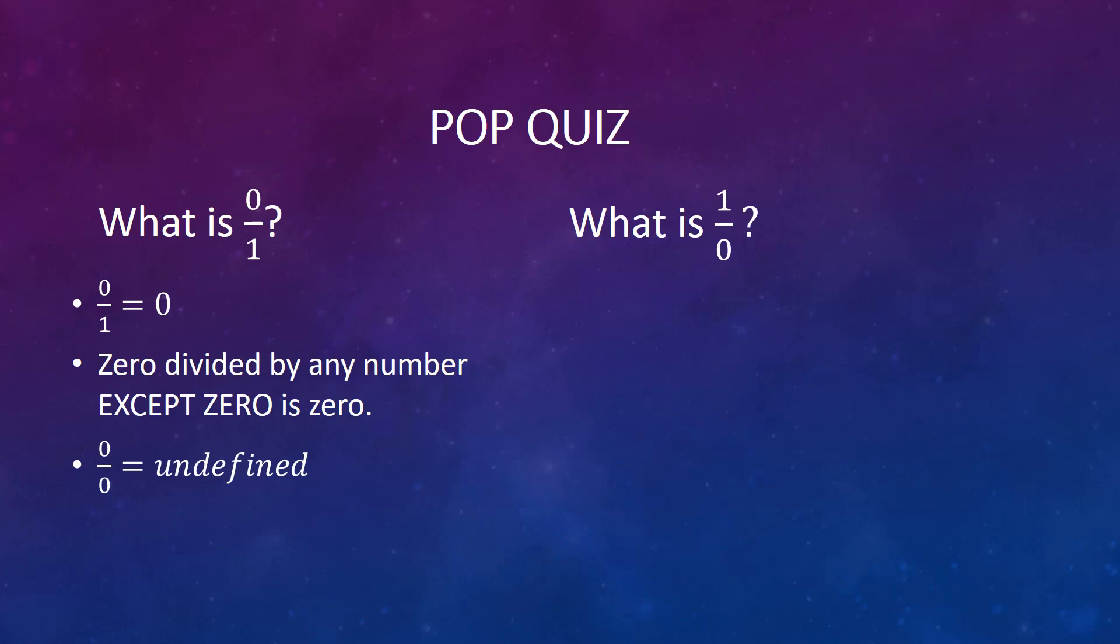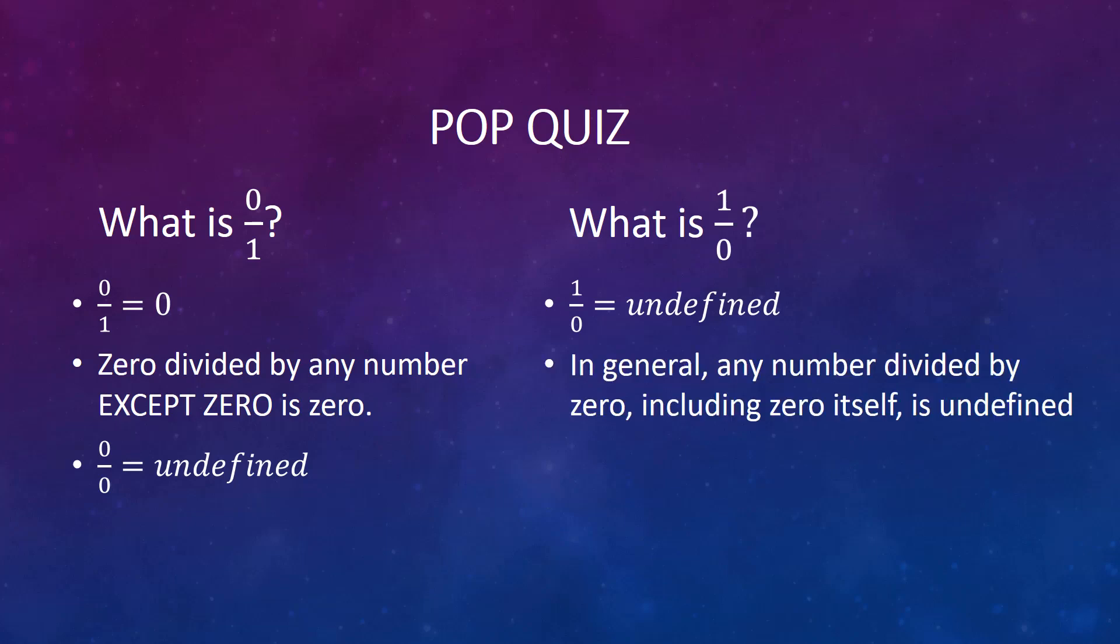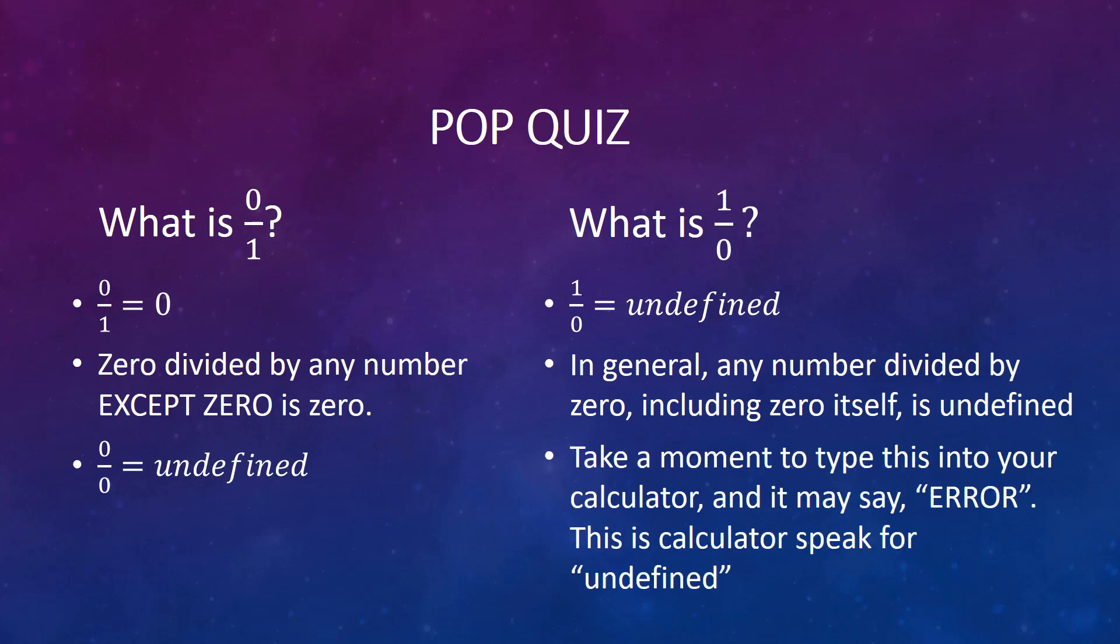If you don't believe me, see what happens when you type zero divided by zero on your calculator. Likewise, one divided by zero is also undefined. In fact, any number divided by zero, including zero itself, is undefined. Again, take a moment to type this into your calculator. Your calculator may say something like error. This is calculator speak for undefined.